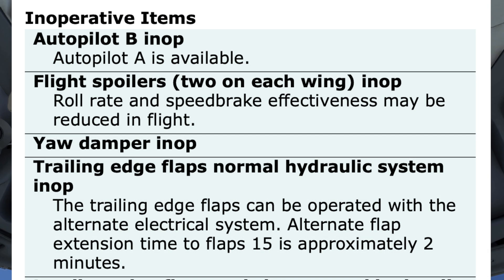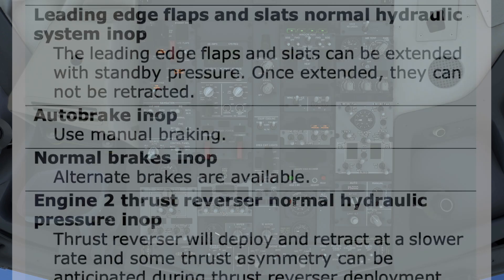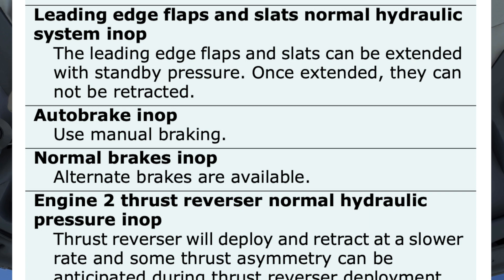Inoperative items: Autopilot B inoperative — Autopilot A is available. Flight spoilers 2 on each wing inoperative — roll rate and speed brake effectiveness may be reduced in flight. Yaw damper inoperative. Trailing edge flaps — normal hydraulic system inoperative. The trailing edge flaps can be operated with the alternate electrical system. Alternate flap extension time to flaps 15 is approximately 2 minutes. Leading edge flaps and slats — normal hydraulic system inoperative. The leading edge flaps and slats can be extended with standby pressure. Once extended, they cannot be retracted.